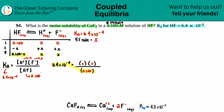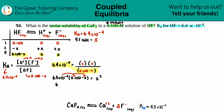Since we can't assume, we keep the −x. Now we have 6.4 times 10 to the negative fourth times (0.100 − x) equals x². Distributing gives: 6.4 times 10 to the negative fifth minus 6.4 times 10 to the negative fourth x equals x². Since we have both x and x² terms, this is a quadratic equation.